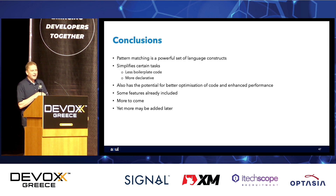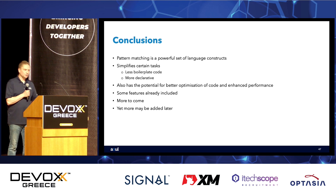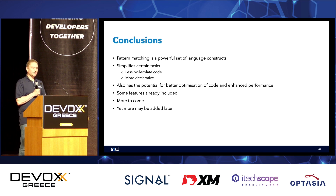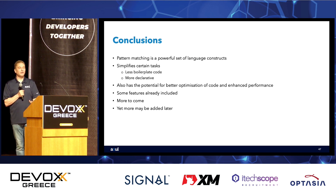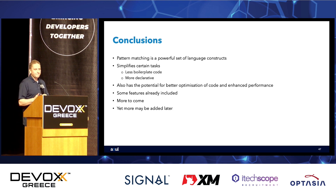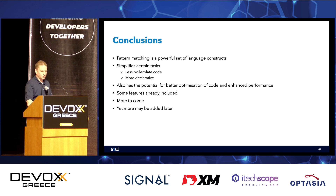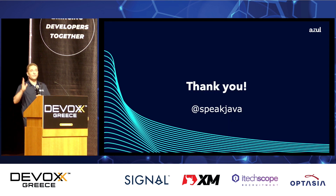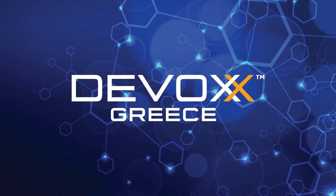In summary, pattern matching is a very powerful set of language features and constructs that definitely simplifies a number of different tasks. It helps eliminate a lot of boilerplate code, makes things more declarative, and importantly doesn't lose readability — once you get used to pattern matching it becomes very clear what's going on. It also has the potential for better optimization. Some features are already included, and there are more plans for pattern matching beyond what was discussed here.